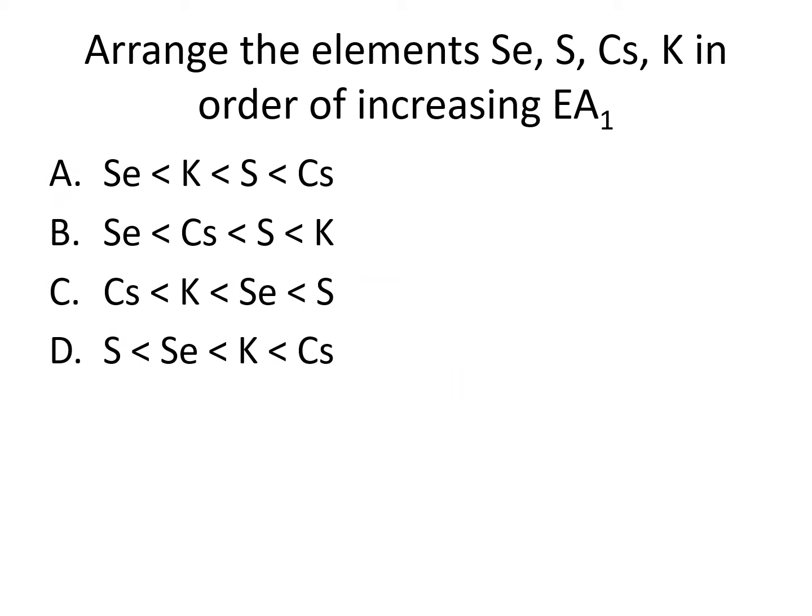Arrange the elements selenium, sulfur, cesium, and potassium in order of increasing first electron affinity. Is it A: selenium, then potassium, then sulfur, then cesium? B: selenium, then cesium, then sulfur, then potassium? C: cesium, then potassium, then selenium, then sulfur? Or D: sulfur, then selenium, then potassium, then cesium?